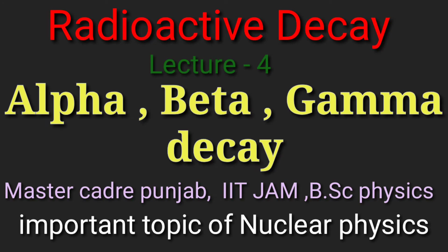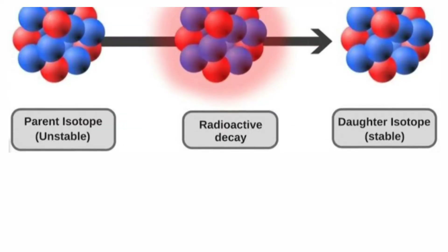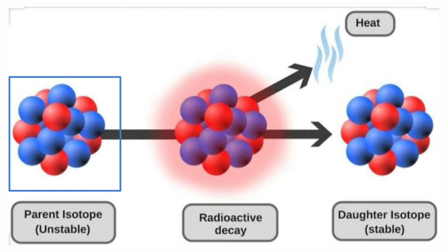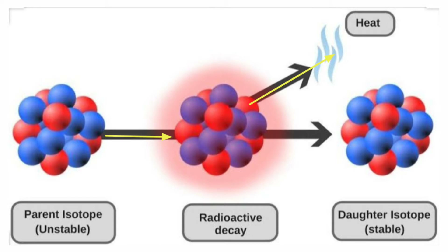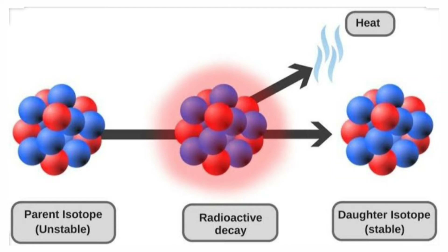Welcome to the channel. Today we will discuss alpha, beta, and gamma decay. Radioactive decay is the spontaneous breakdown of an atomic nucleus resulting in the release of energy and matter from the nucleus. Before any decay, the unstable isotopes are known as the parent isotope or parent nuclei. When radioactive decay occurs, heat or matter is released from the nucleus.